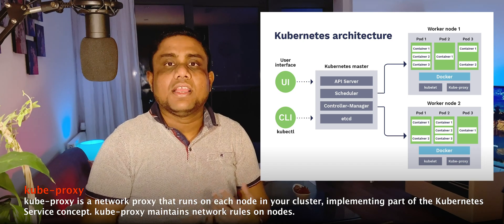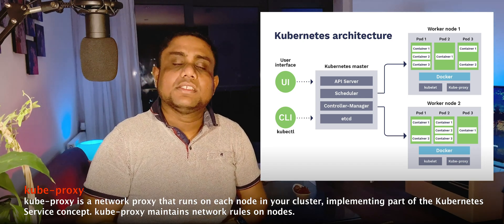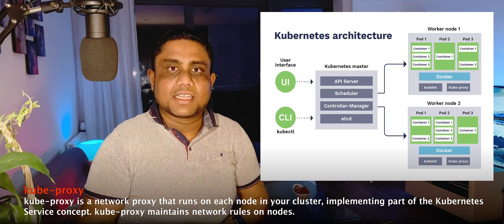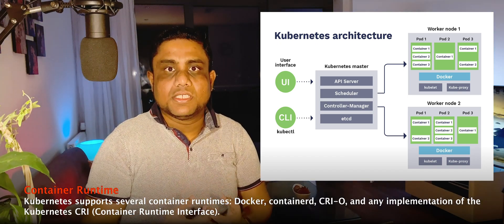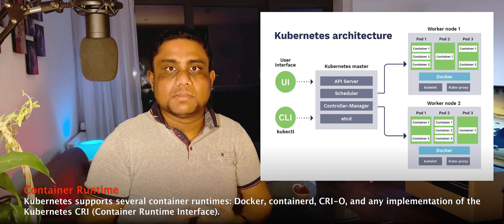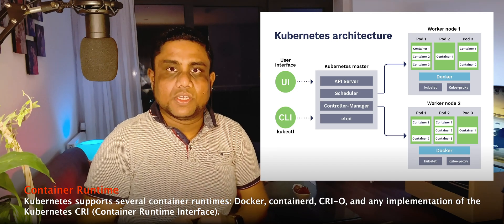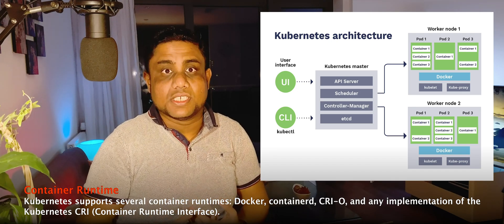The other two components inside the worker nodes are kube-proxy and the container runtime. Kube-proxy maintains the network rules on the nodes and helps implement the Kubernetes service concept inside the cluster. Container runtime is the software responsible for running containers inside the worker nodes, such as Docker. There are also multiple add-ons and additional components — go through the documentation and course materials to learn more details.